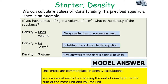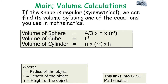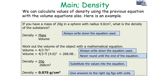To calculate density using the equation, you write out the equation density equals mass over volume, substitute the values into the equation, and work out your answer with the correct significant figures and units. If the shape is regular or symmetrical, we can find its volume using mathematical equations: the volume of a sphere is 4/3 times pi times r cubed; the volume of a cube is l cubed; and the volume of a cylinder is pi times r squared times h.